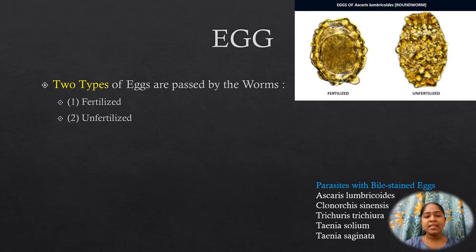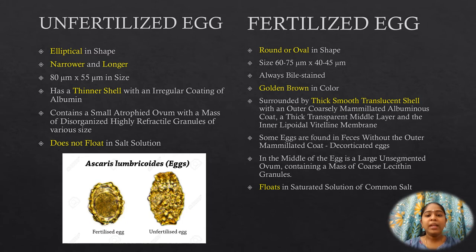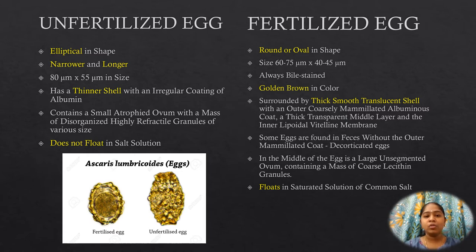A clear differentiation between unfertilized and fertilized eggs: the unfertilized egg is elliptical in shape, narrower and longer. It has a thin shell with an irregular coating of albumin. It contains a small atrophic ovum with a mass of disorganized, highly refractile granules of various sizes. Unfertilized eggs do not float in salt water.